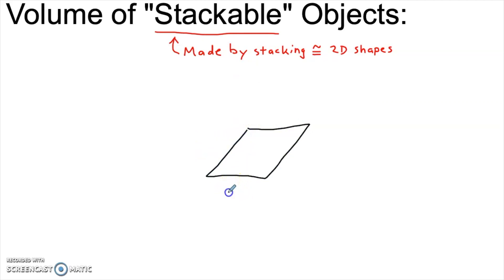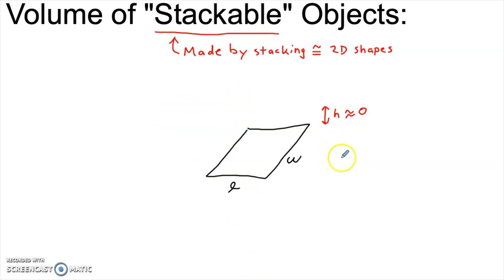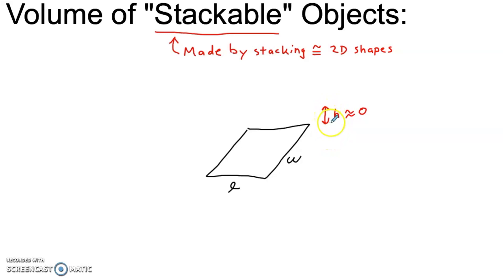One sheet of paper is pretty close to two-dimensional. Sure, it has a thickness we could measure, but it's pretty thin — mostly length and width. But you know from experience that if you take a piece of paper and put another on top of it and another, you're going to get height building up. The reason this happens is that paper does actually have a height, but mathematically if we make that height go closer and closer to zero, then that piece of paper becomes closer and closer to a mathematical two-dimensional object. What calculus allows us to do is take that limit down to zero and still stack them up to create volume.